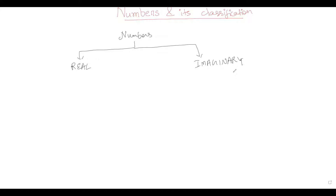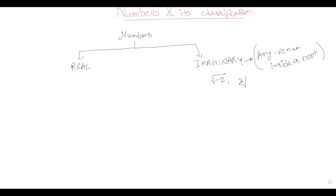Any negative number inside a root can be termed as an imaginary number. For example, square root of minus two, cube root of minus seven, fifth root of minus 23, and so on.